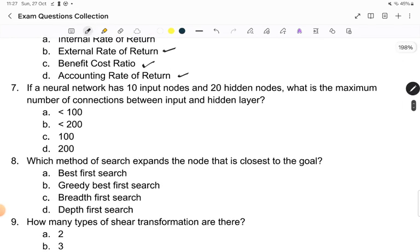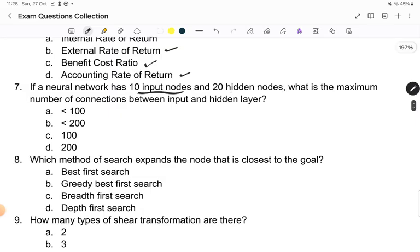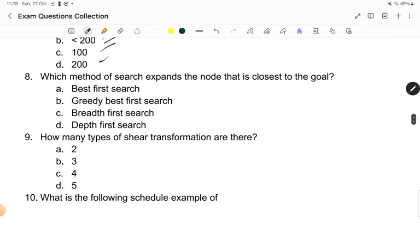Next question was if a neural network has 10 inputs and 20 hidden nodes, what is the maximum number of connections between input and hidden layer? Options less than 100, less than 200, 100, 200. Next question was which method of search expands the node that is closer to the goal? BFS best first search, greedy best first search, breadth first search, and depth first search.